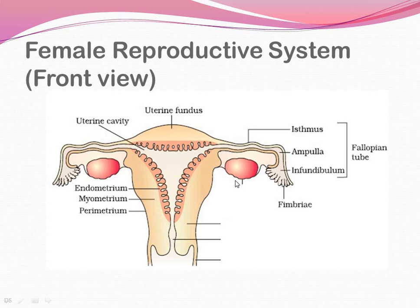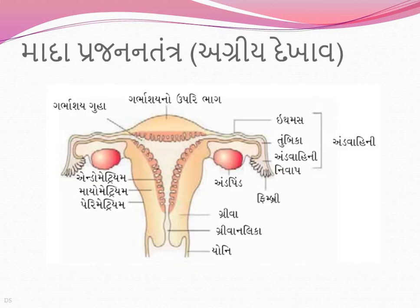Continuing the diagram review: the primary sex organ in the female is the ovary - a pair. The neck region connecting uterus to vagina is the cervix. The canal through the cervix is the cervical canal, which opens into the vagina. The upper part of the uterus is the uterine fundus. Students are advised to pause the video and practice labeling the diagram.